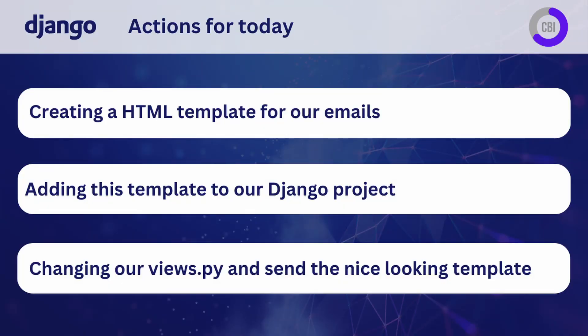Today we're going to go a little bit further and add a nice looking template to our emails. The things we need to do are threefold. First, we're going to a website where we can easily create an HTML template for free, even without signing up. Next, we're going to make sure that the template gets inputted into our Django project. And thirdly, we're going to change our view so that the email we send will use this template.